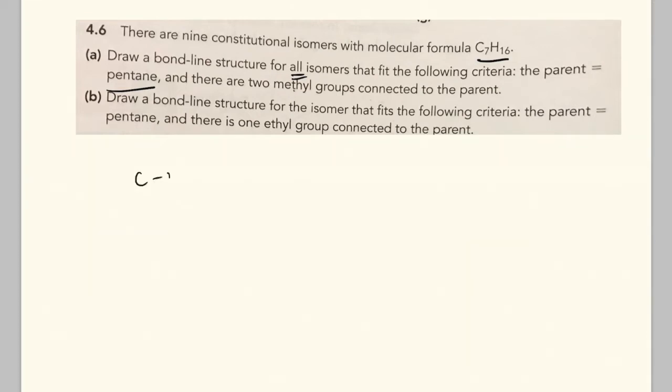So if you're stuck with bond line drawings and you're just starting out, definitely by all means take it slow. One, two, three, four, five carbons. And then we just want to sketch in two methyl groups.